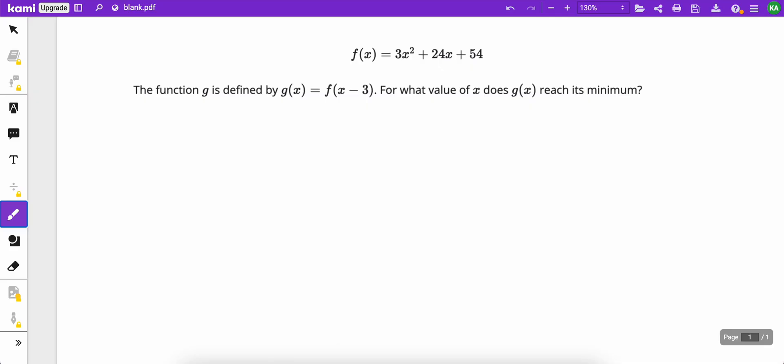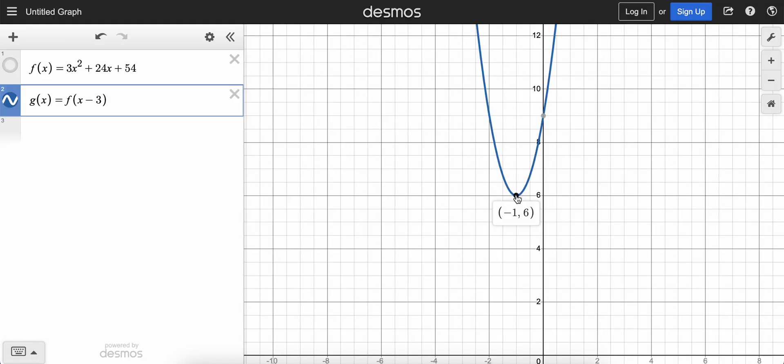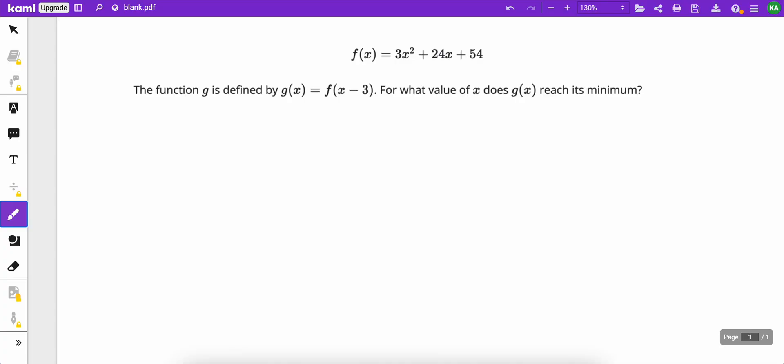So for what value of x does g of x reach its minimum? Well, the minimum is down here, and the x value there is negative 1. So the answer to the question would just be negative 1.